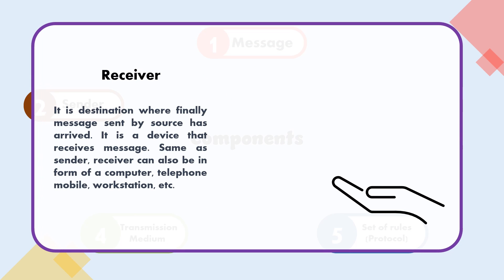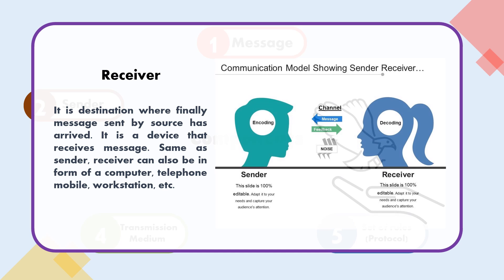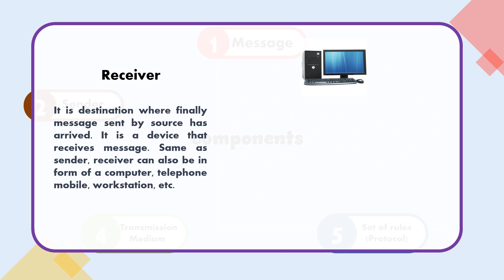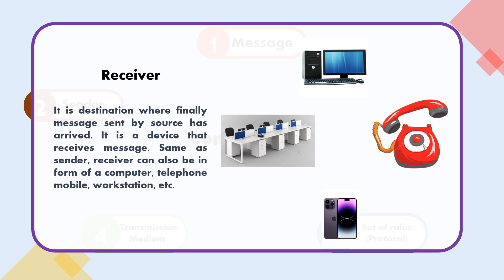The receiver is the destination where the message sent by the source finally arrives. It is a device that receives the message. Same as the sender, the receiver can also be in the form of a computer, telephone, mobile, workstation, etc.